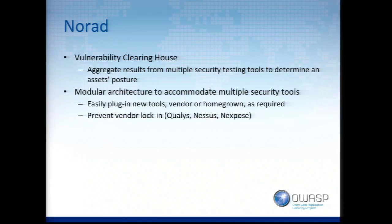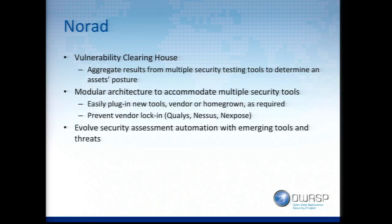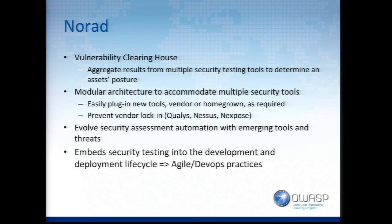We want to run whatever we want in our environments and make it modular to accommodate multiple tools — plug them in whether they be vendor-specific or homegrown — and prevent vendor lock-in. Maybe we run Qualys for one product, Nessus for another, or both and correlate results. We also want to evolve our security assessment automation with new tools based on new threats. If someone finds a new vulnerability and writes a Python or Ruby script to test for it, we want to pull that in quickly. This is all about embedding security testing into the development and deployment lifecycle — it needs to be API-driven and fit Agile and DevOps best practices.